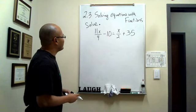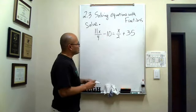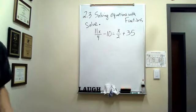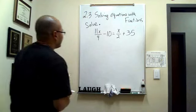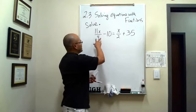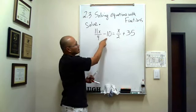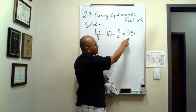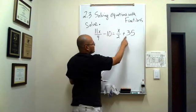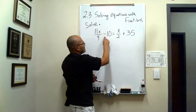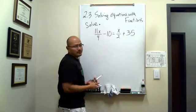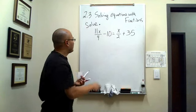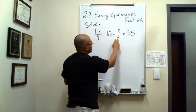Here's an equation: 11x over 4 minus 10 is equal to x over 2 plus 35. Notice that there are at least two fractions, but in some ways there are actually four fractions. The denominator here is 4, here the denominator is 1, here the denominator is 2, and here the denominator is 1. So we're going to try to find the lowest common denominator between 4, 1, 2, and 1.